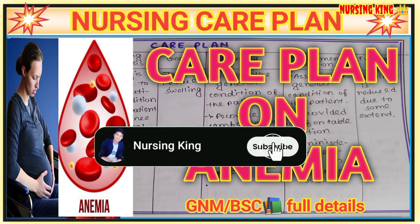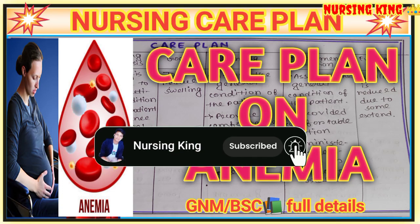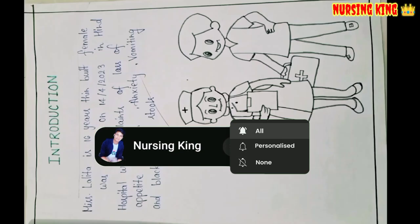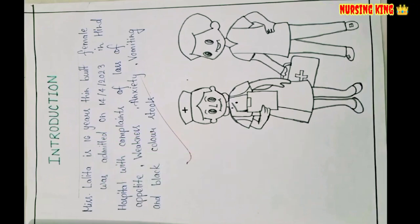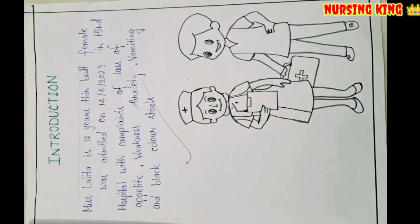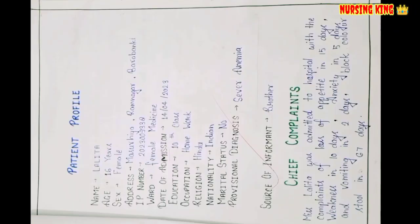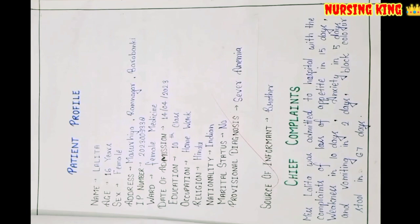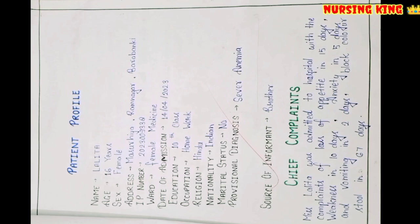Hello guys, welcome back to my YouTube channel Nursing King. Today we are doing a care plan on anemia. First, you have to write an introduction regarding the patient details. After the introduction, you have to write the patient profile — like name, age, sex, address, IP number — and also the chief complaint.